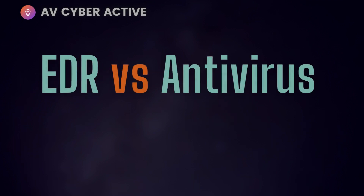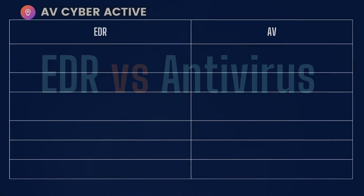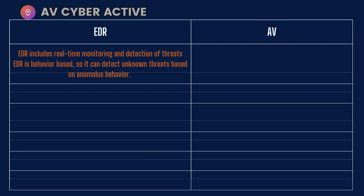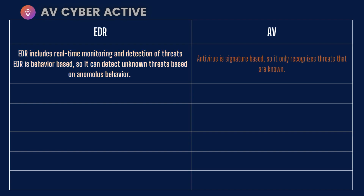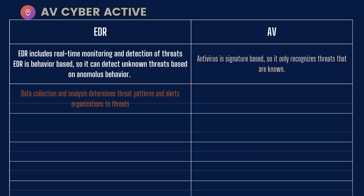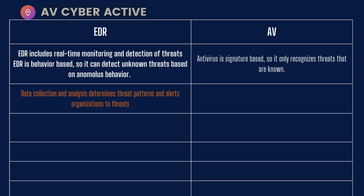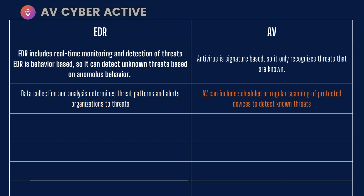How does EDR differentiate from a regular antivirus program? EDR solutions include real-time monitoring and detection of threats. EDR is behavior-based, meaning it can detect unknown threats based on anomalous behavior. Antivirus, on the other hand, is signature-based, so it only recognizes known threats. EDR does data collection and analysis that determines patterns and alerts the organization to unknown threats, whereas antivirus performs scheduled or regular scanning of protected devices to detect only known threats.